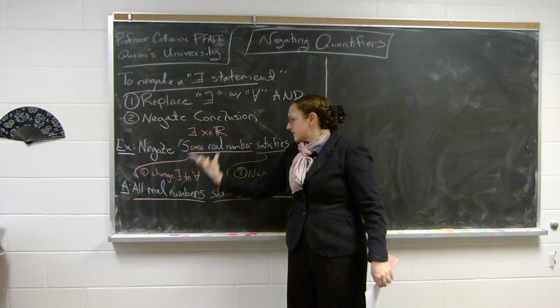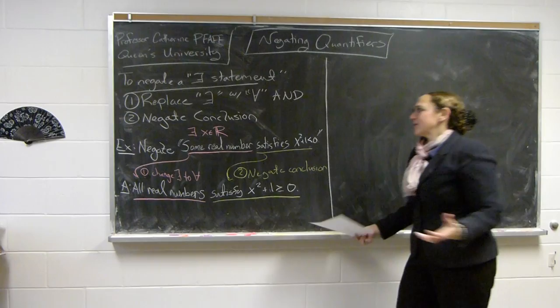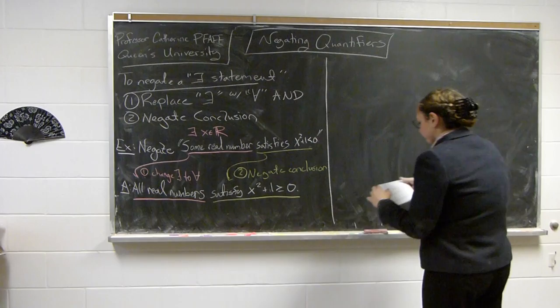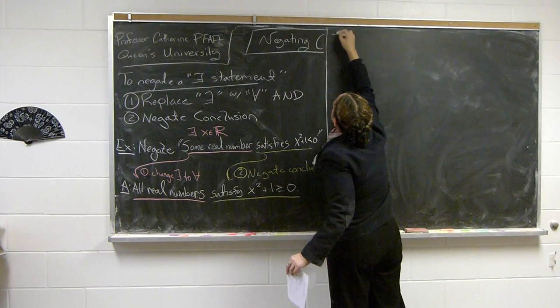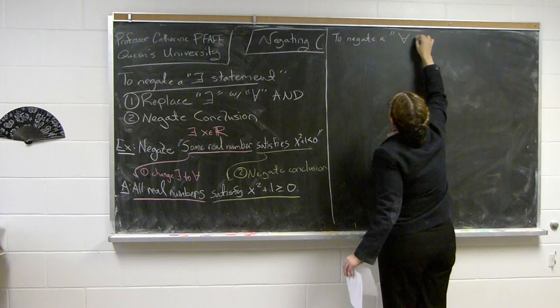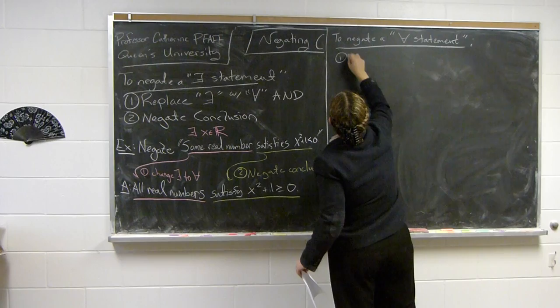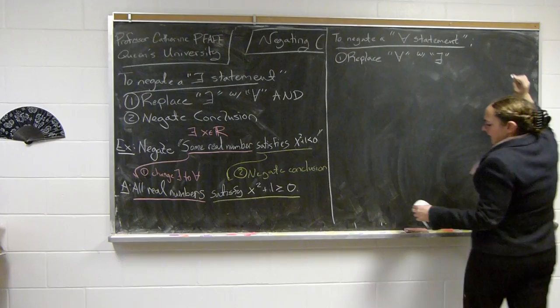So we switched 'there exists' to 'for all' and then negated the conclusion. In the other circumstance, we do the same thing in reverse — we replace 'for all' with 'there exists' and then negate the conclusion. So to negate a 'for all' statement, we replace 'for all' with 'there exists' and negate the conclusion.